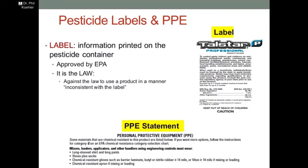I wanted to start out by taking a look at a couple of pesticide labels. The label is what is going to give you advice on what personal protective equipment should be used. The label is the information that's printed on the pesticide container, provided by the manufacturer, and it has to be approved by EPA. It's against the law to use a product in a manner that is inconsistent with the label.